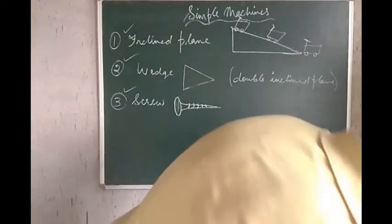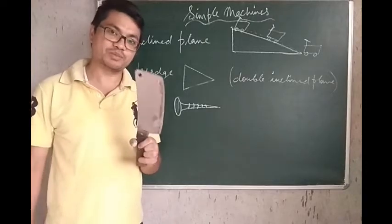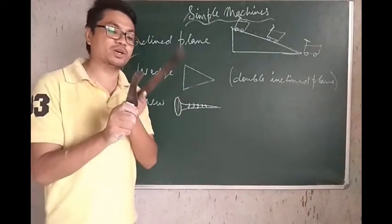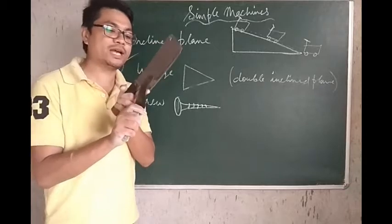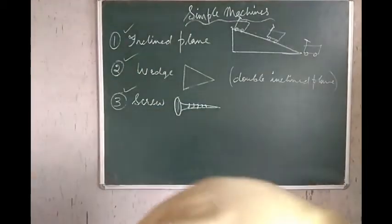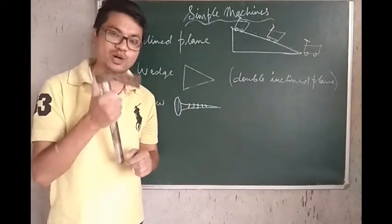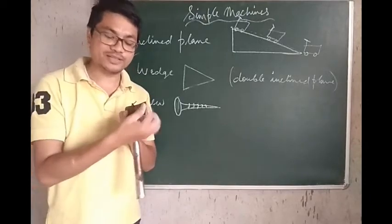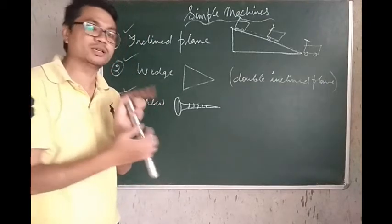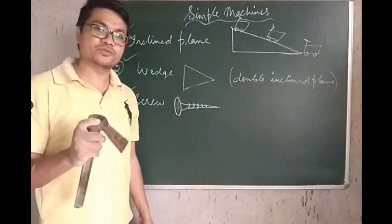For example, this chopper here is a simple machine — it is an example of a wedge. A knife is also an example of a wedge because it has a sharp end, and the size goes on increasing from there. Likewise for a chopper. A better example would be this old rusty axe I have here — this is the sharp or pointed end, and you can see it is a double inclined plane. This shape is a wedge, and a simple machine called a wedge is used to cut into different bodies.